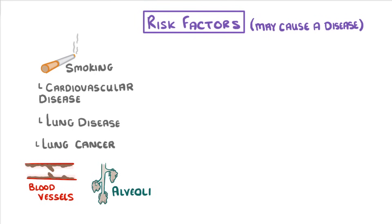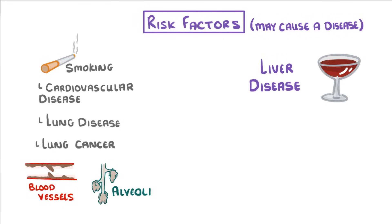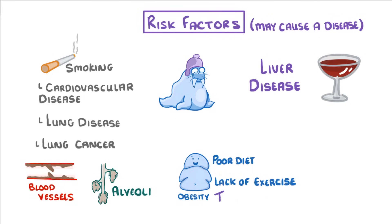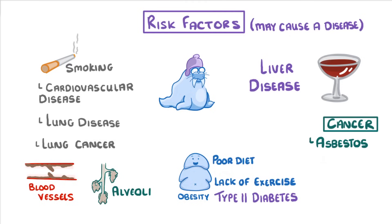Meanwhile, drinking too much alcohol can cause liver disease, and either smoking or drinking while pregnant can cause a whole range of health problems for the unborn baby. Other direct links include obesity, which itself can be caused by poor diet and lack of exercise, and can go on to cause type 2 diabetes. Cancer can also be caused by exposure to substances like asbestos or radiation.